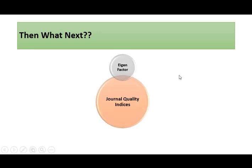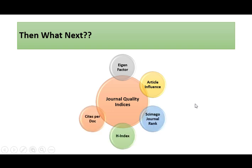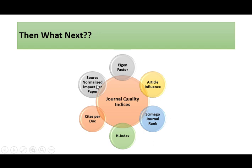Since impact factor has these limitations, there are other general quality indicators available, such as eigenfactor, article influence, SJR, h-index, cites per doc, and SNIP. These six are the most common quality indicators that can supplement or replace the general impact factor. The two most common indexing agencies, Web of Science and Scopus, provide all six of these quality indicators for each journal. In the next video, I'll explain how these indicators are calculated and what they mean.